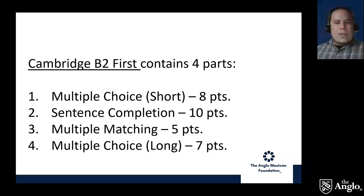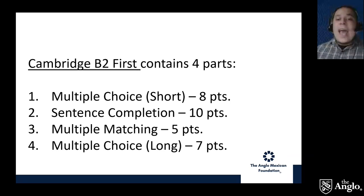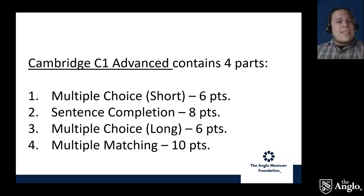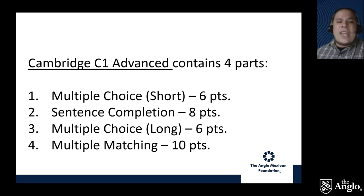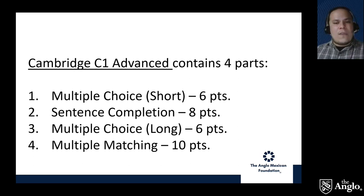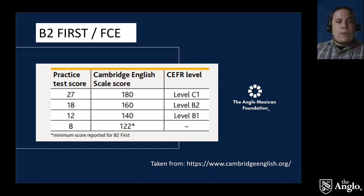If we do the math, multiple choice stands for 15 points out of 30 total — basically half. Same case with C1 Advanced or CAE: multiple choice for short extracts is 6 points, and the long section is 6 points, so 12 is almost half. As you can see, this multiple choice exercise type is basically half of the evaluation.